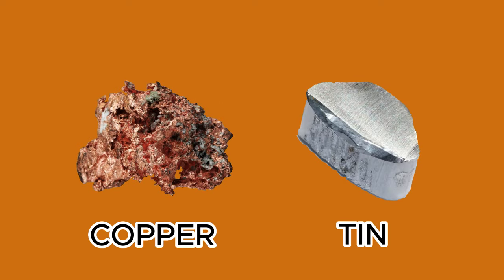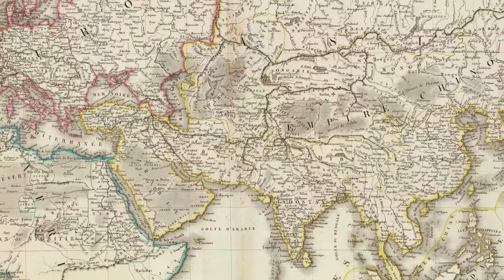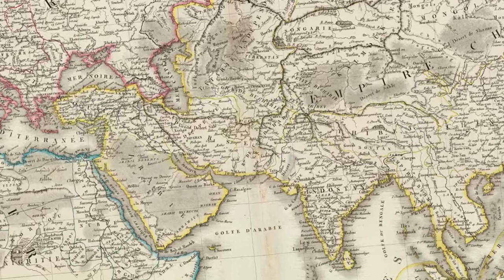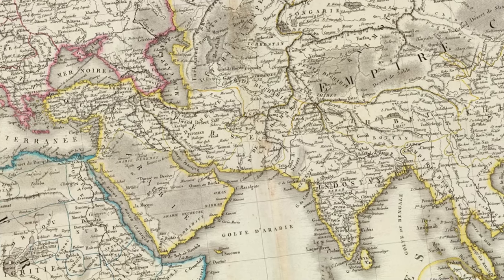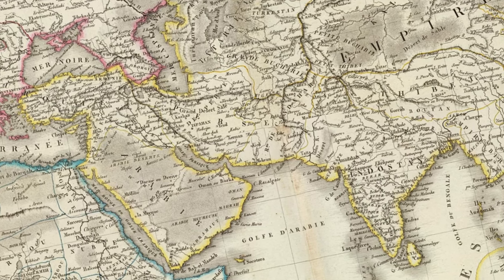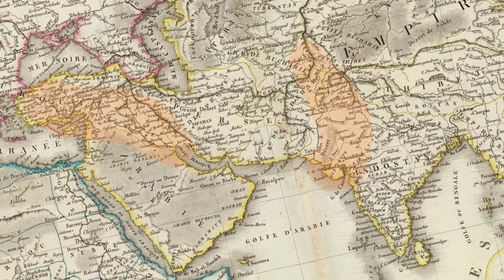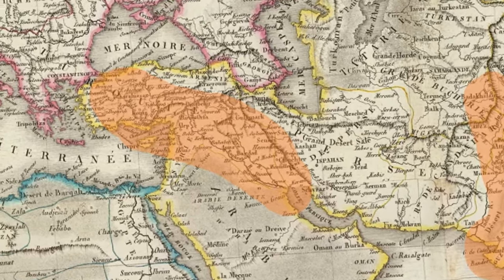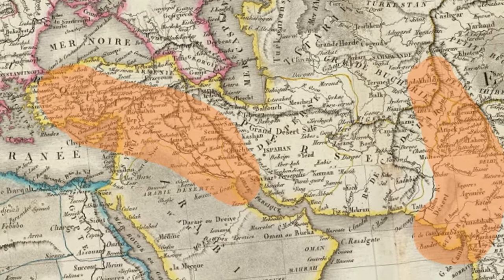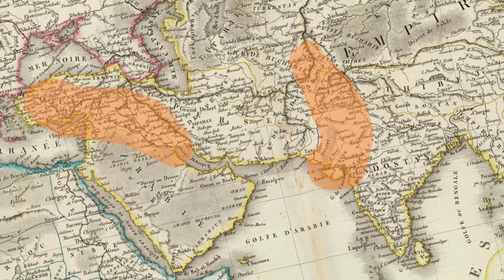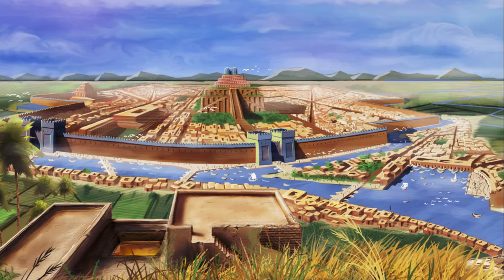Bronze, as an alloy of copper and tin, was created in ancient times, likely around 3300 BCE. The exact date and location of its discovery are not precisely known, as it predates written history. However, archaeological evidence suggests that the earliest bronze artifacts were produced in regions such as the Middle East, Mesopotamia, and the Indus Valley.